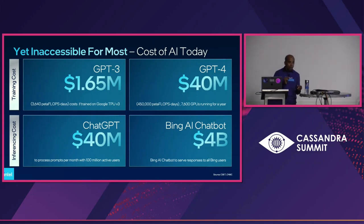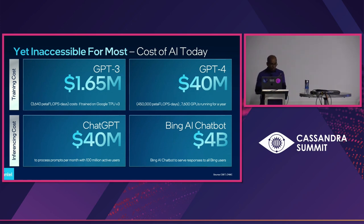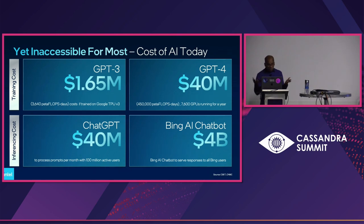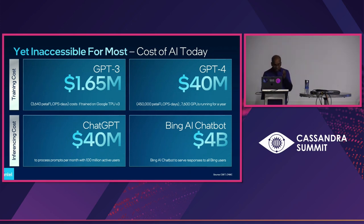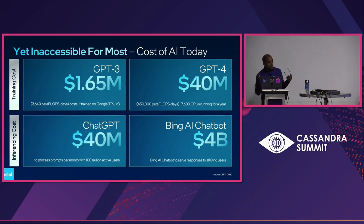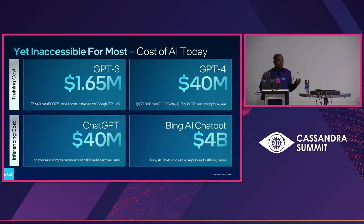That growth has happened, but it is still inaccessible to a lot of developers across the world, whether on the training side or the inferencing side. For example, the training cost for GPT-3 is $1.65 million if trained on Google TPU V3. For GPT-4, it's a $40 million training cost. Not all companies have that level of infrastructure, compute processing power, or the dollar amount to get training going. Similarly, the inferencing cost for ChatGPT means it's a lost business at this point, because the amount of dollars it takes to run a single ChatGPT query is pretty significant. That's where ChatGPT Plus and enterprise models are coming in to make it more sustainable.